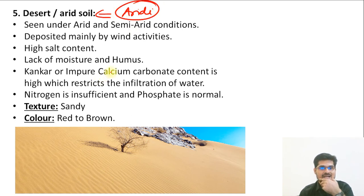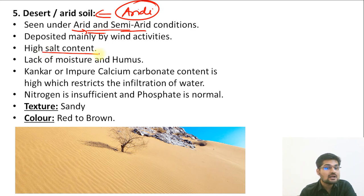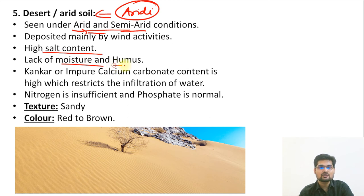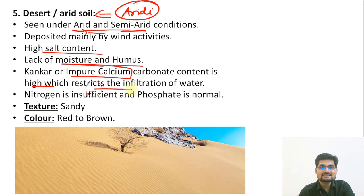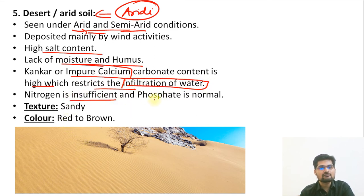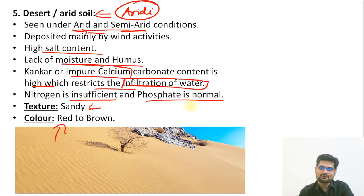The fifth type is desertic soil, known as Aridisol in USDA classification. These soils are found where semi-arid and arid conditions prevail. They have high salt content due to heavy evaporation and lack moisture and humus. Calcite content is high and restricts infiltration of water. Nitrogen is insufficient, phosphate is normal, texture is sandy, and color is red to brown.